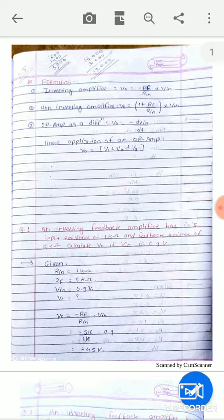Inverting amplifier: Vo is equal to RF upon Rin into Vin. The formula is separate. Non-inverting amplifier means Vo is equal to 1 plus RF upon Rin into Vin. The output voltage is equal to minus dVin upon dt. And op-amp adder is V1 plus V2 plus V3.